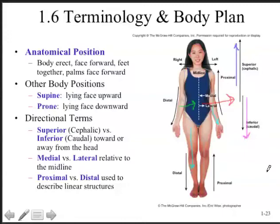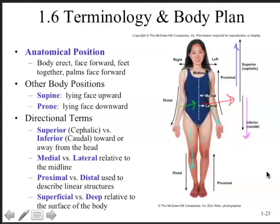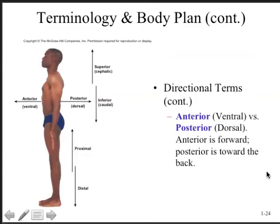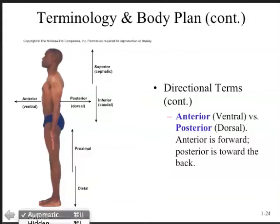Superficial and deep refers to being either near the surface of the body or down towards the core. For example, your skin would be superficial to your skeletal system, and your heart would be deep to your rib cage. There are also terms for the front or back of the body: anterior or ventral means towards the front, while posterior or dorsal means towards the back, as seen in this lateral view.